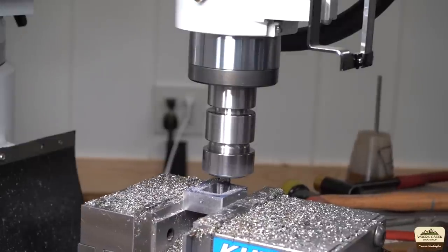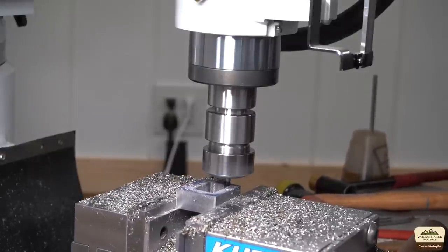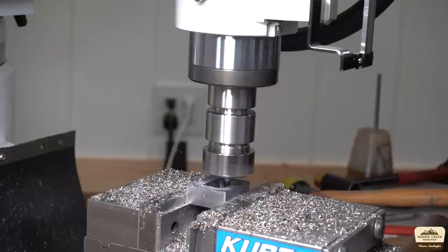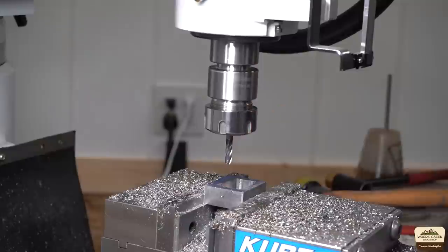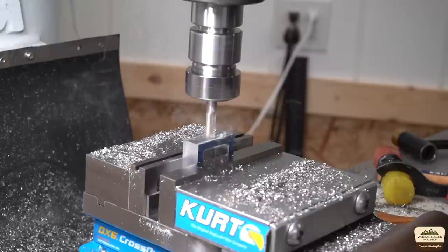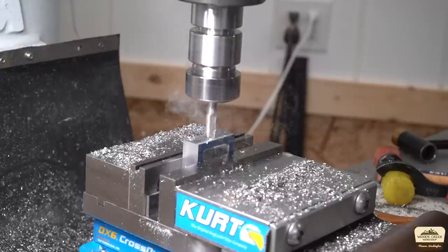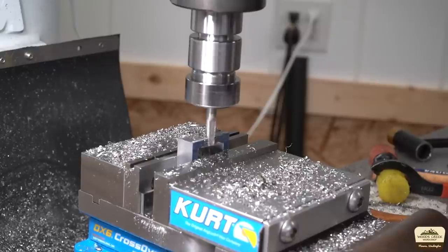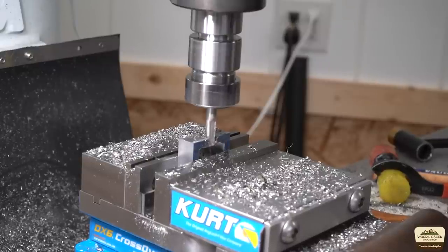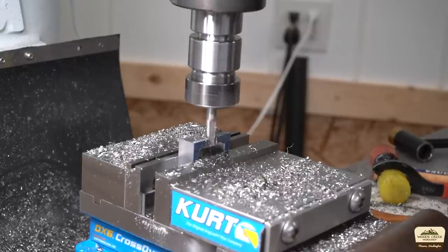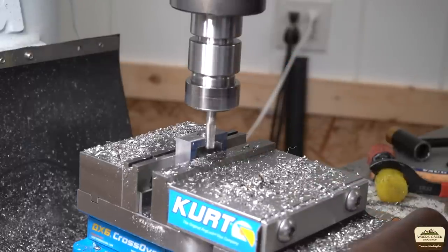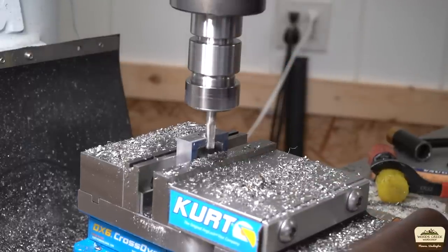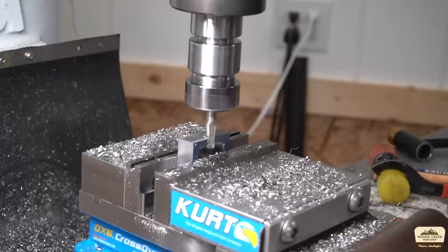Here we come back with the quarter inch end mill to clean up the sides and the pockets a little bit. I had to machine an opening for the motor shaft to fit through, and there's no critical dimensions here, just big enough while leaving enough material for rigidity. Then I did step over the bit left and right just to clean up the sides a little bit.